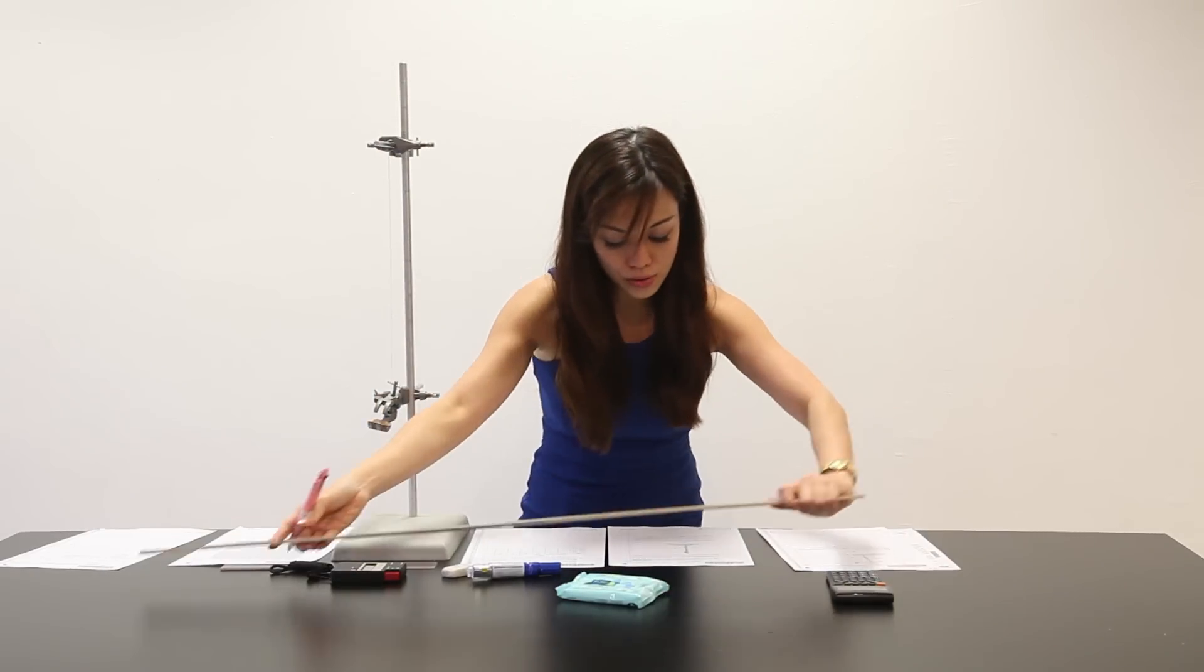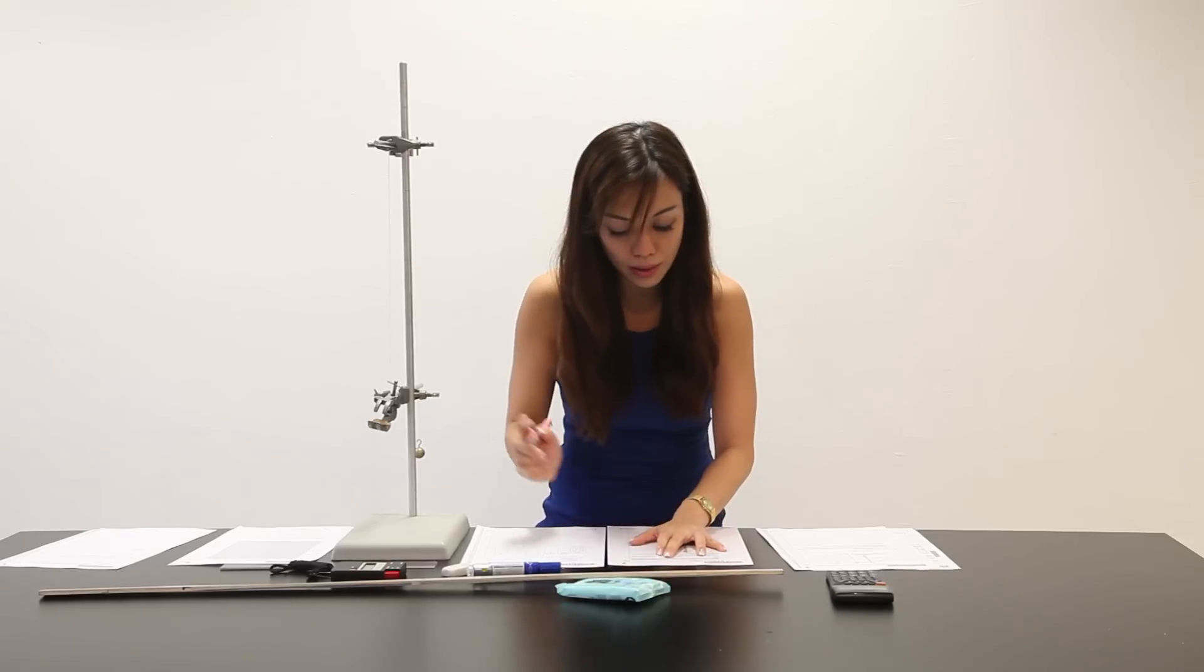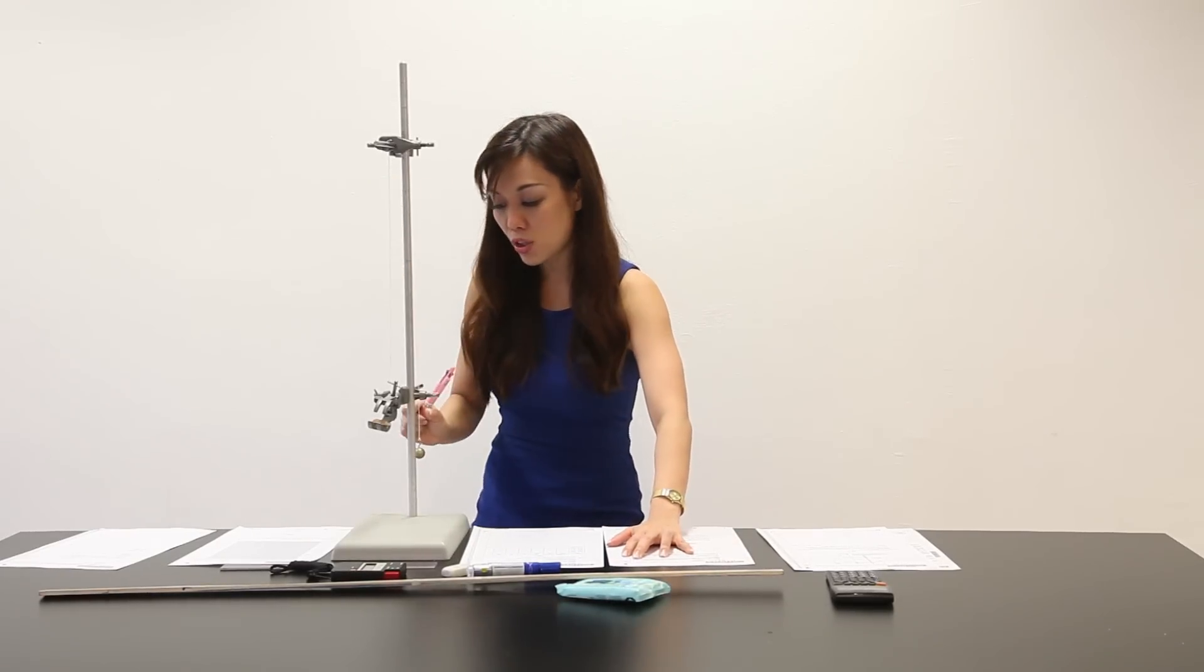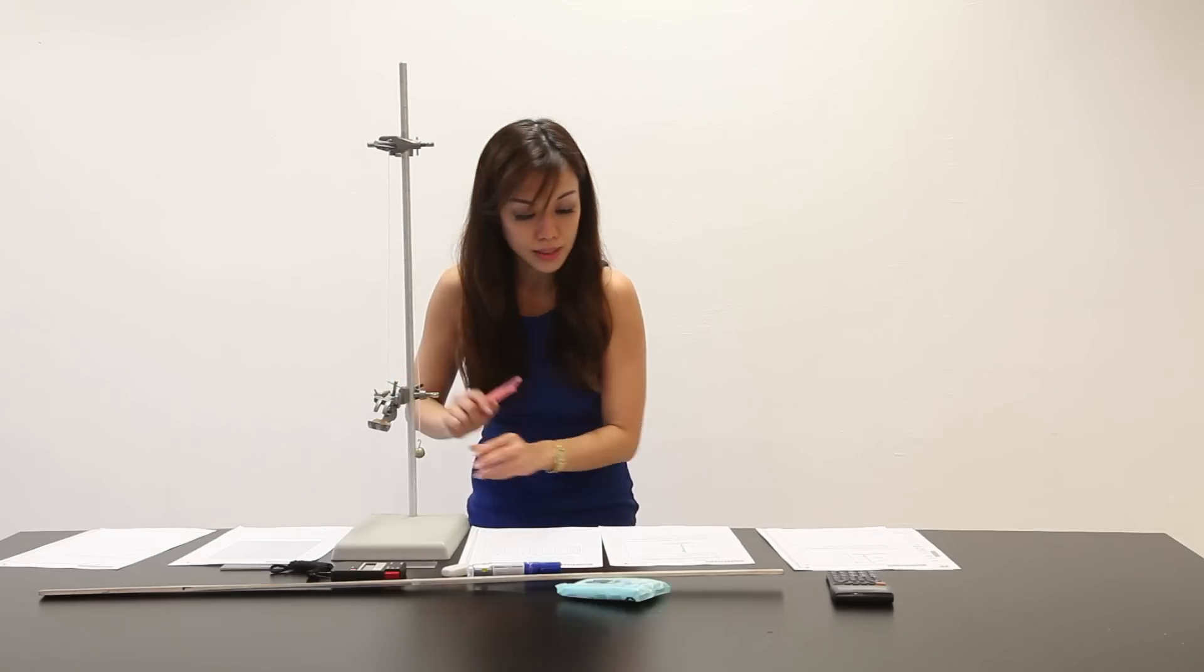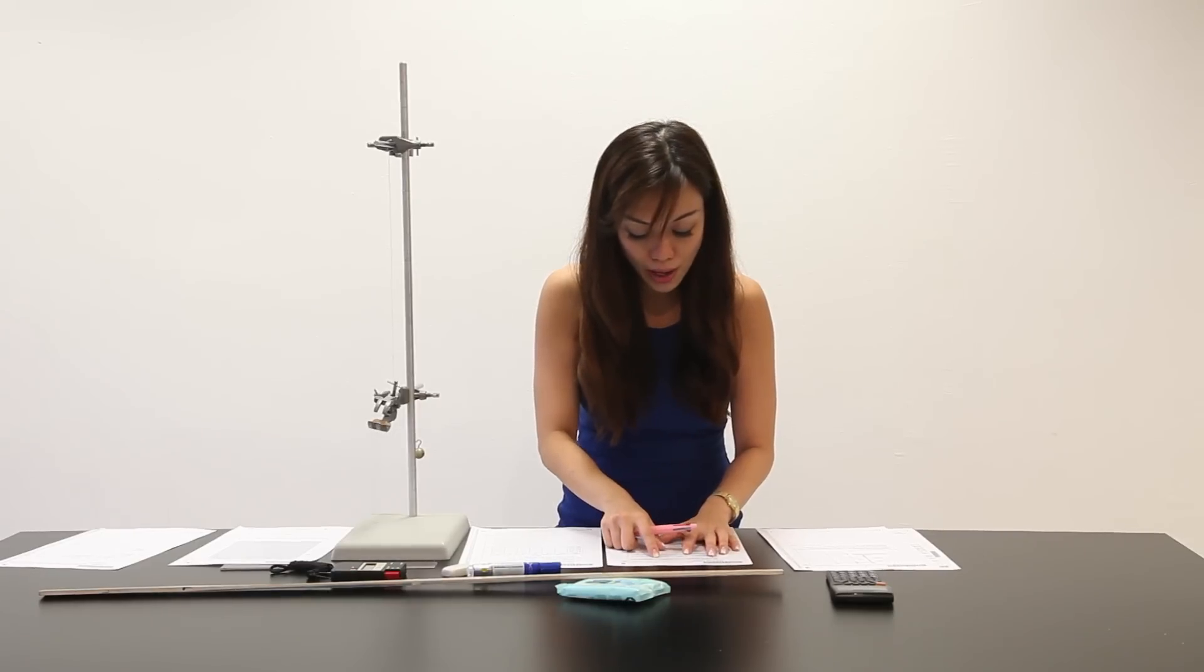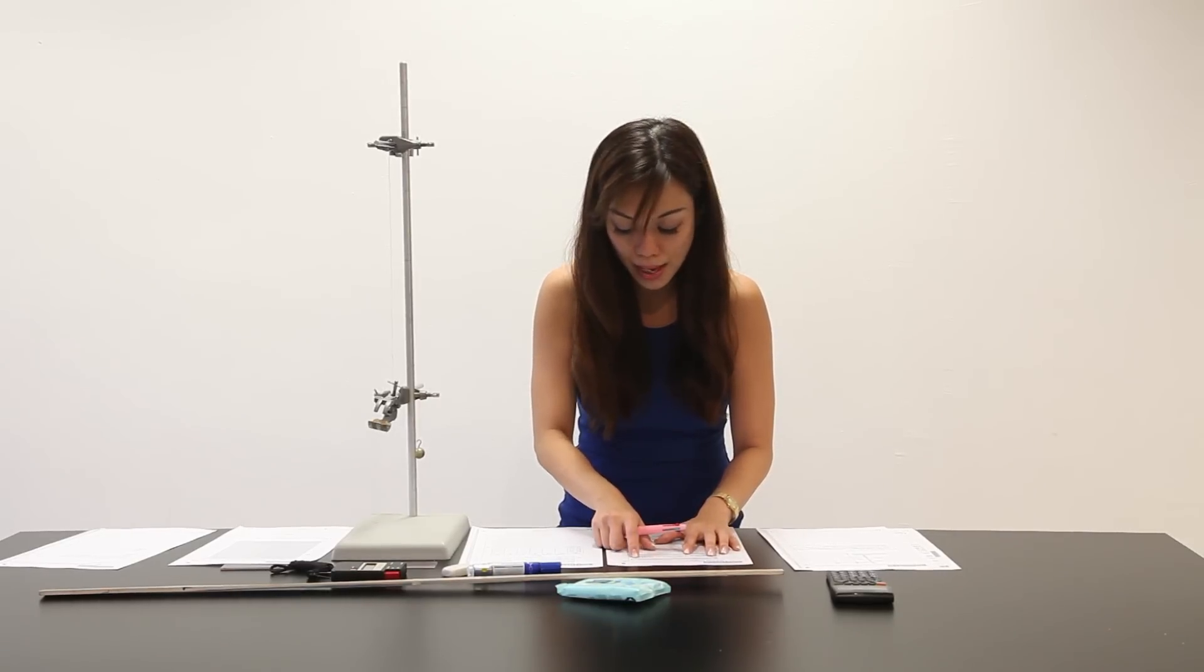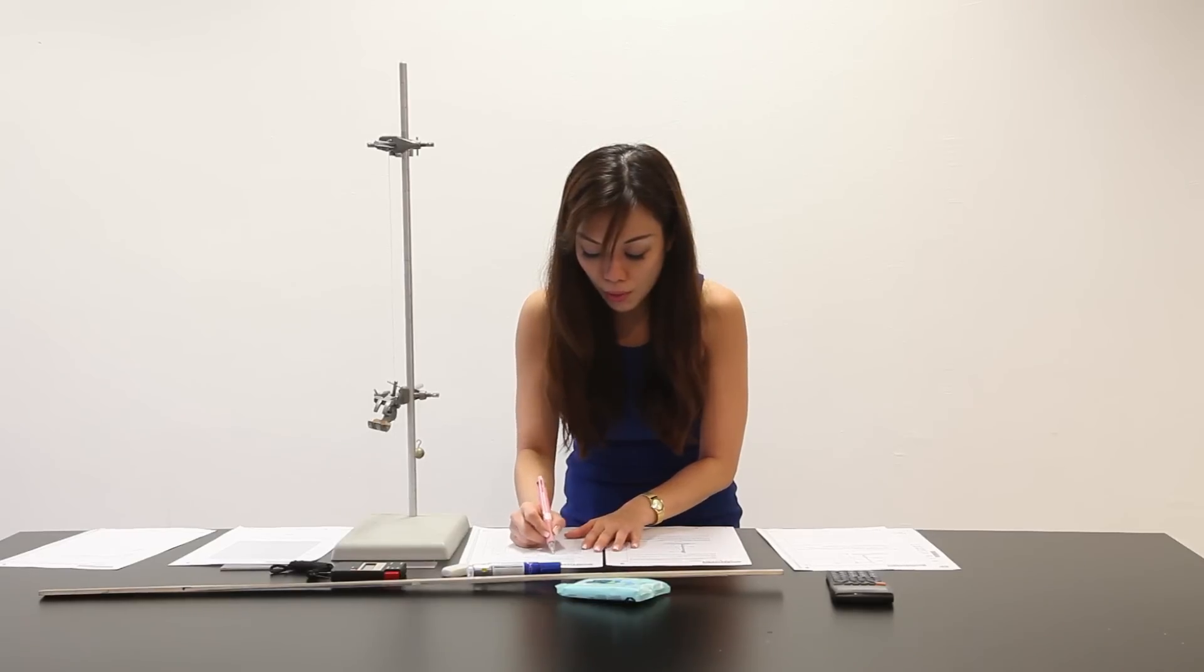So, and it goes on to say, ensure that the rod at the bottom clamp is horizontal and that it just touches the string. This is the string and my string must be touching the bottom of my clamp here, which is exactly what I've done here. Tighten the clamp, measure and record the value of L to the nearest 0.1 cm in table 1.1.